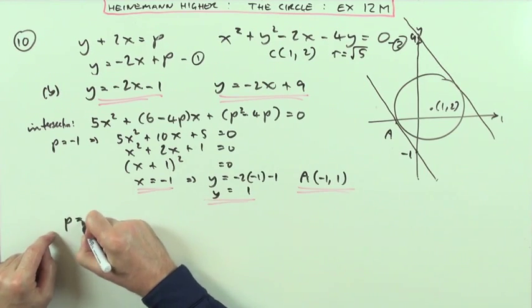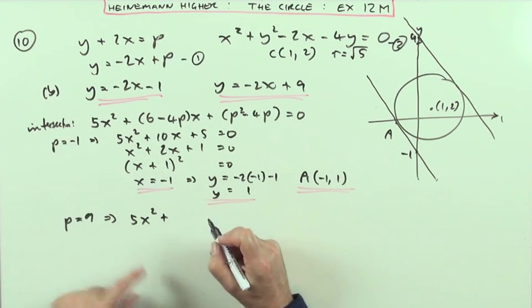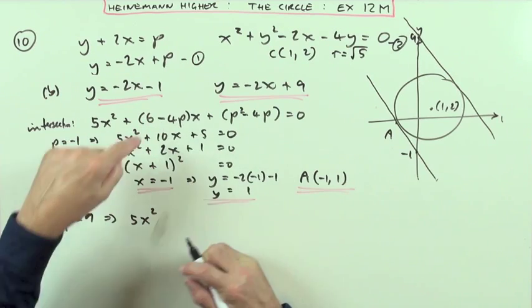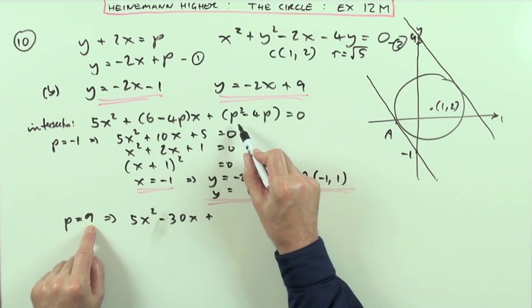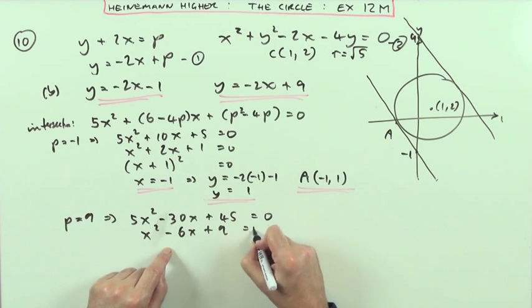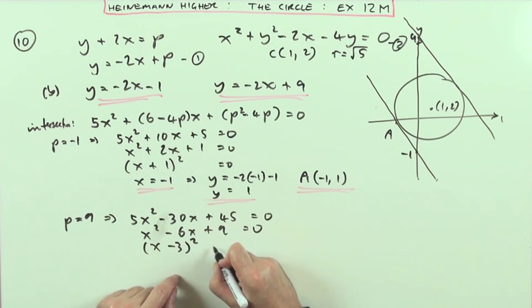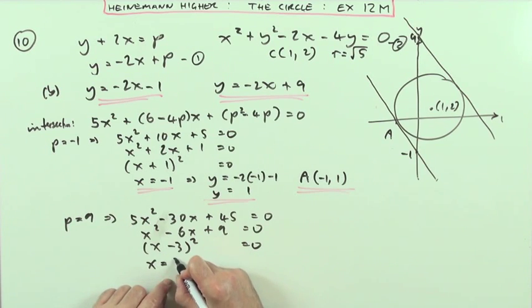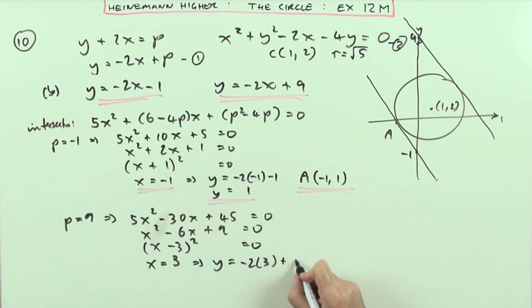The other line, in the other line, p was equal to 9. So putting that into that equation would give me 5x squared plus, and that'll be 6, so I'll be subtract then, it'll be 6 minus 36, so that's minus 30x plus, and that'll be 9 9s, that'll be 45, equals 0, divided by 5, x squared minus 6x plus 9 equals 0, which since it's a tangent factorizes, of course, to a square, x minus 3, x minus 3 equals 0, in which case, x is equal to 3, in which case, y is going to be negative 2 times 3, plus the 9, so that's going to be negative 6 and 9 is 3, so y is equal to 3, so b is the point 3, 3.